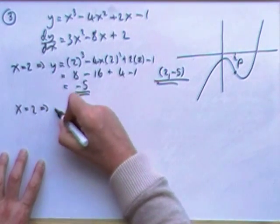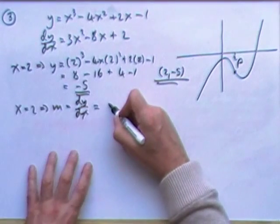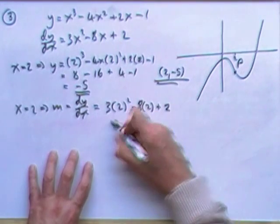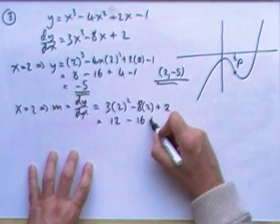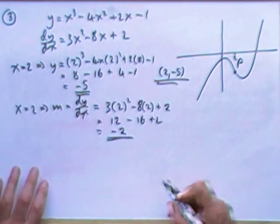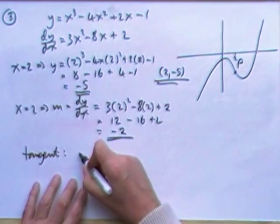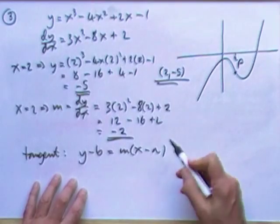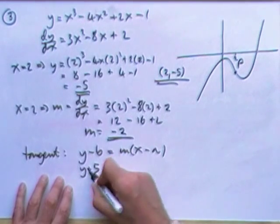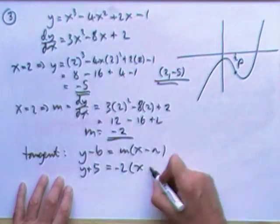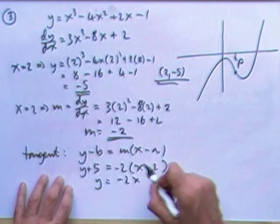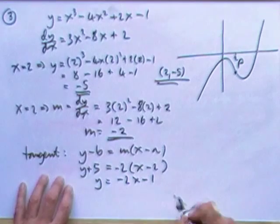Then the second bit. x equals two means the gradient, which is given by dy by dx, will be three times two squared minus eight times two plus two. So that's going to be 12 minus 16 plus two. That's negative two. Gradient's negative two. So the equation of the line then, the tangent. I'm going to use y minus b is m x minus a. Well, that's the gradient and that's the point. So y take away negative five, we'll just be lazy and put plus five, is negative two times x take away two. So y will be negative two x plus four minus the five. So that's going to be minus one. That's the first bit.